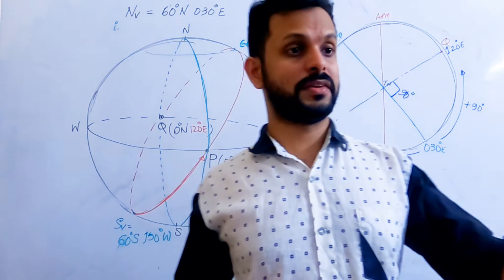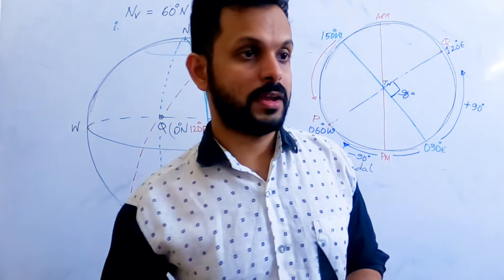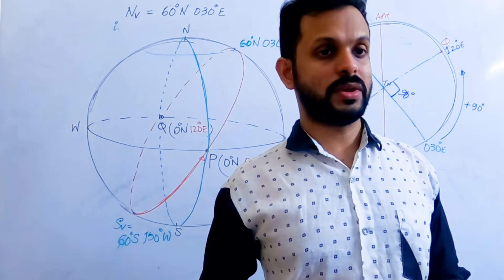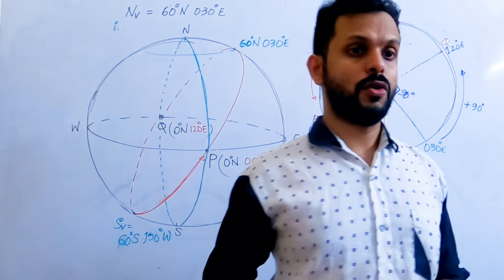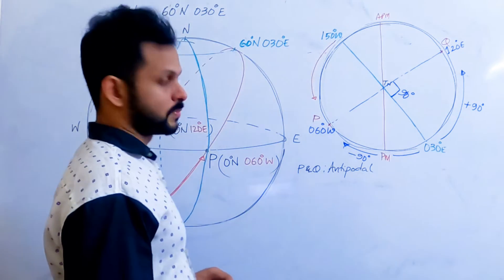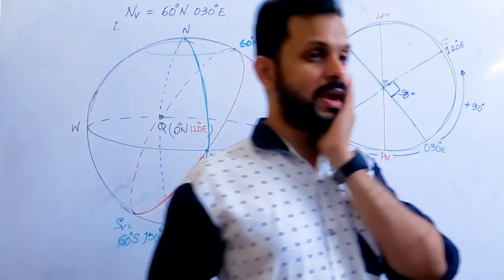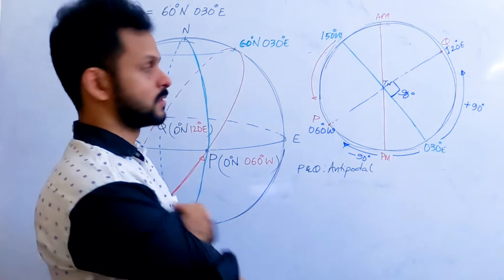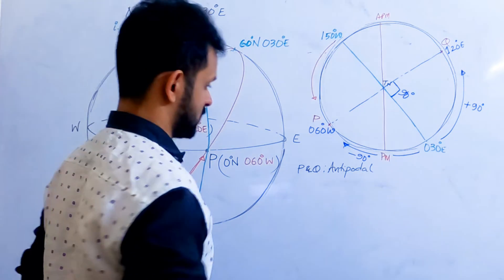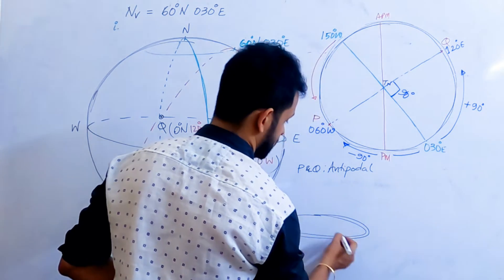What is the angle made by the great circle with the equatorial plane? The angle made by the great circle with the equatorial plane is 60 degrees.